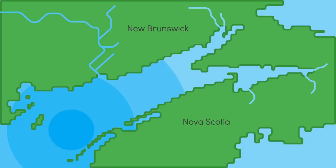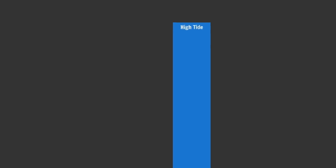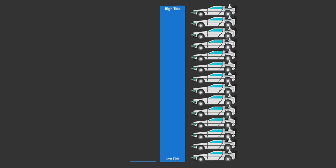The tidal range in the Mediterranean is like a few centimeters. In the Bay of Fundy, it can be a whopping 16 meters. That's like 14 whole DeLoreans stacked on top of each other.